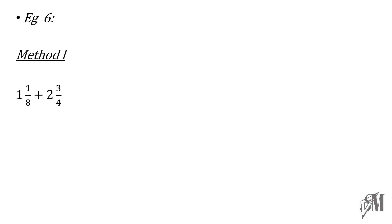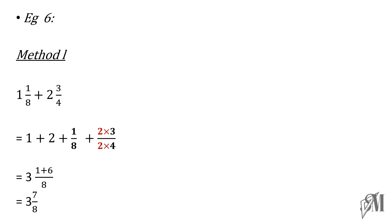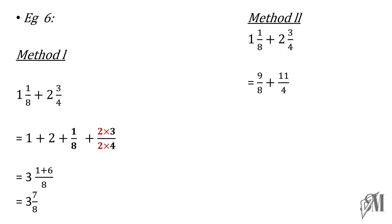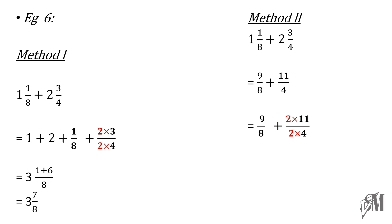Let us look into another example. Under method 1: 1 plus 2, and 1 over 8 plus 3 over 4. In order to equate the denominators, multiply the second fraction up and down by 2, so the denominator becomes 8. It becomes 3 plus 1 plus 6 over 8, that is 3 and 7 over 8. Under the second method for the same example, convert to improper fractions. Before adding, equate the denominators. You get the answer as 31 over 8. When converted to a mixed number, you get the same answer, 3 and 7 over 8.